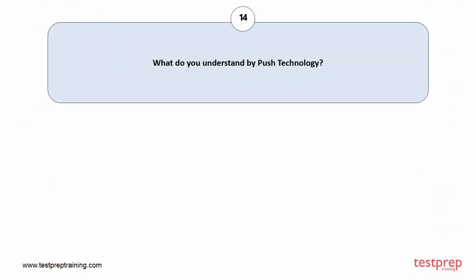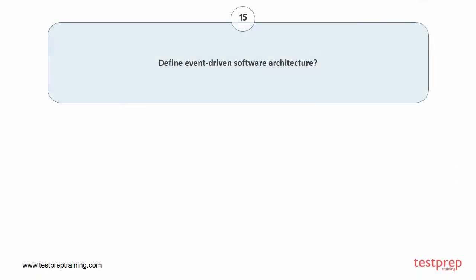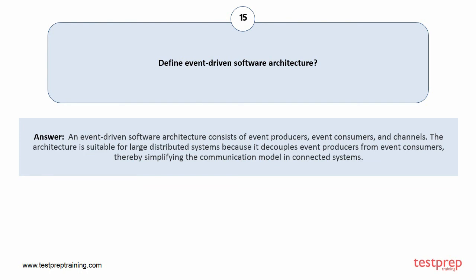Question number fourteen: what do you understand by push technology? Push technology, also known as the publish or subscribe model, transfers information that is initiated from a server to the client. It is the opposite of pull technology that requests for information made from a client to a server. Question number fifteen: define event-driven software architecture. An event-driven software architecture consists of event producers, event consumers, and channels. The architecture is suitable for large distributed systems because it decouples event producers from event consumers, thereby simplifying the communication model in connected systems.